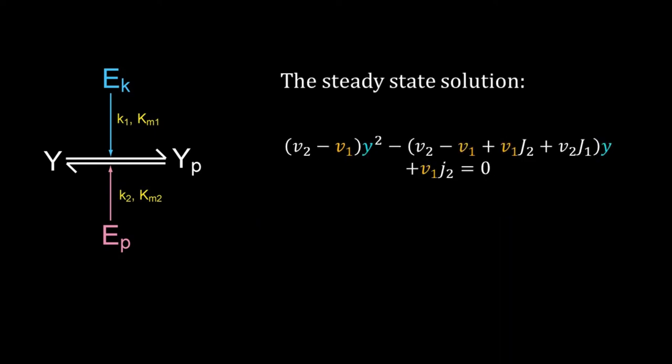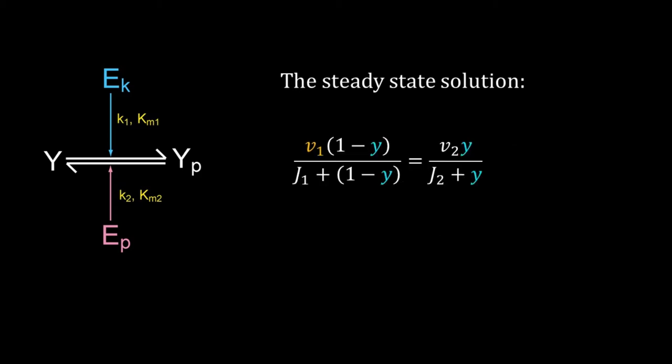Rearrange the terms, we get this quadratic equation of y. Solving this will give the steady state solution. The steady state solution of y will be a function of v1, v2, j1, and j2. We call this Goldbetter-Koshland function. I'm a bit lazy to solve the quadratic equation. Rather, I will represent v1 in terms of y and then analyze it graphically.